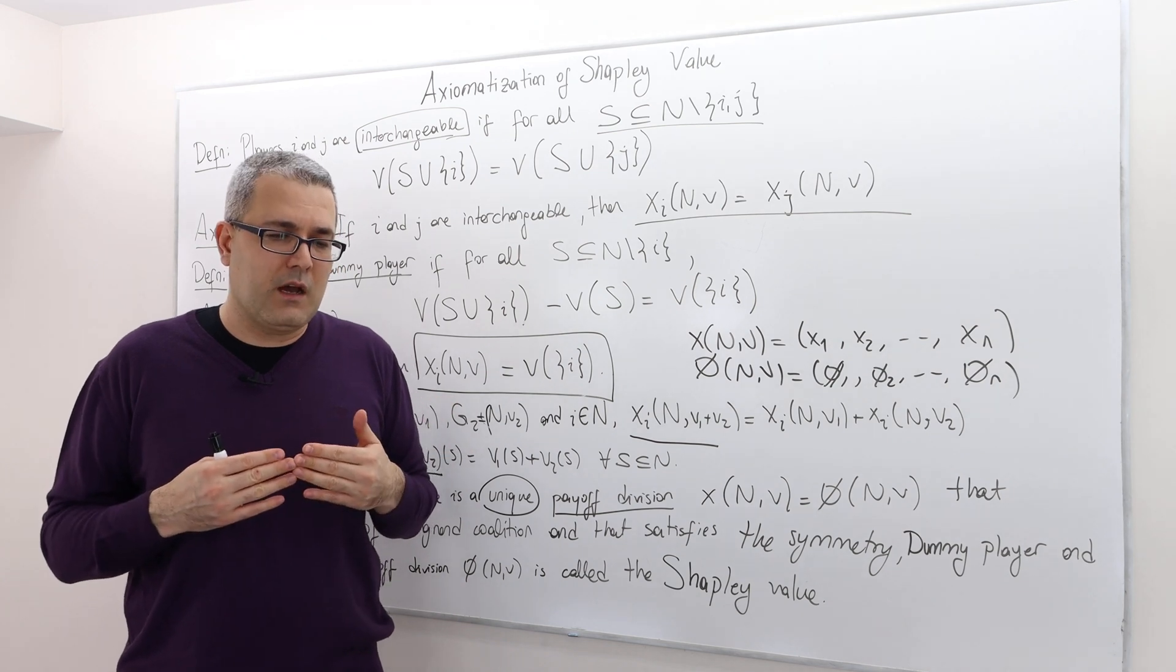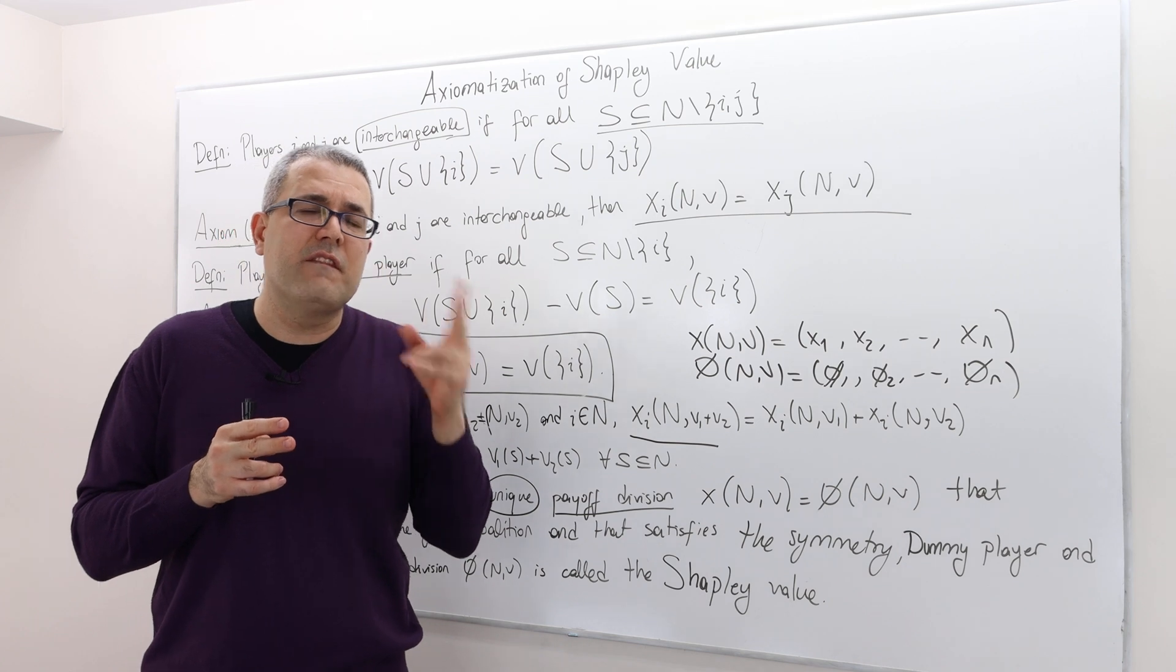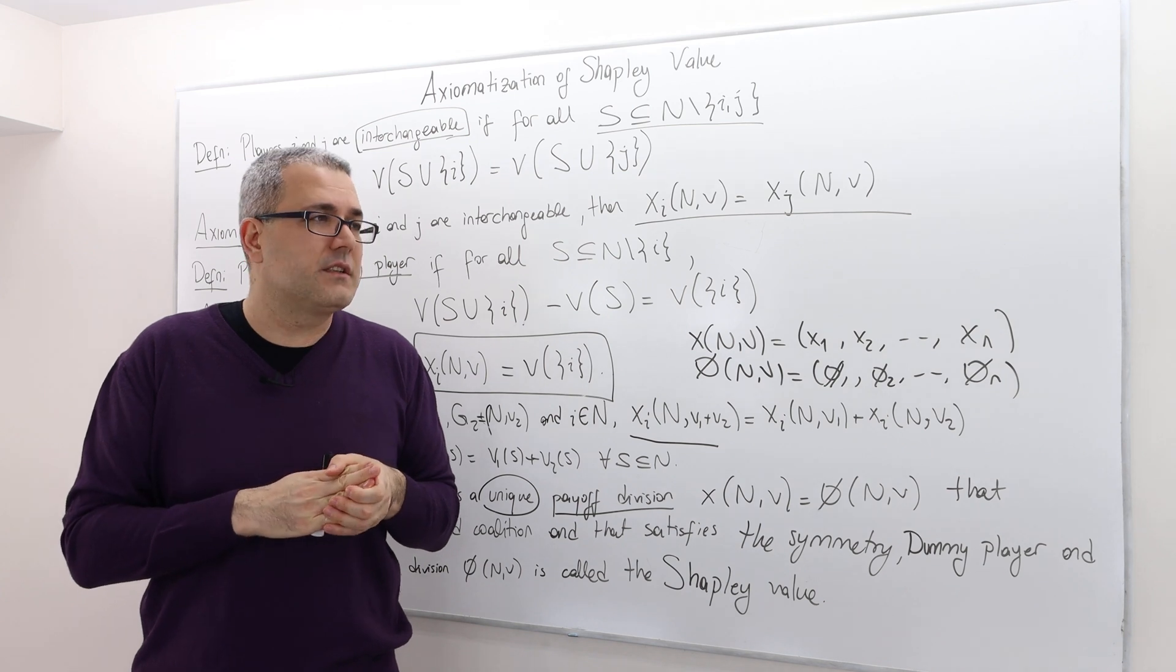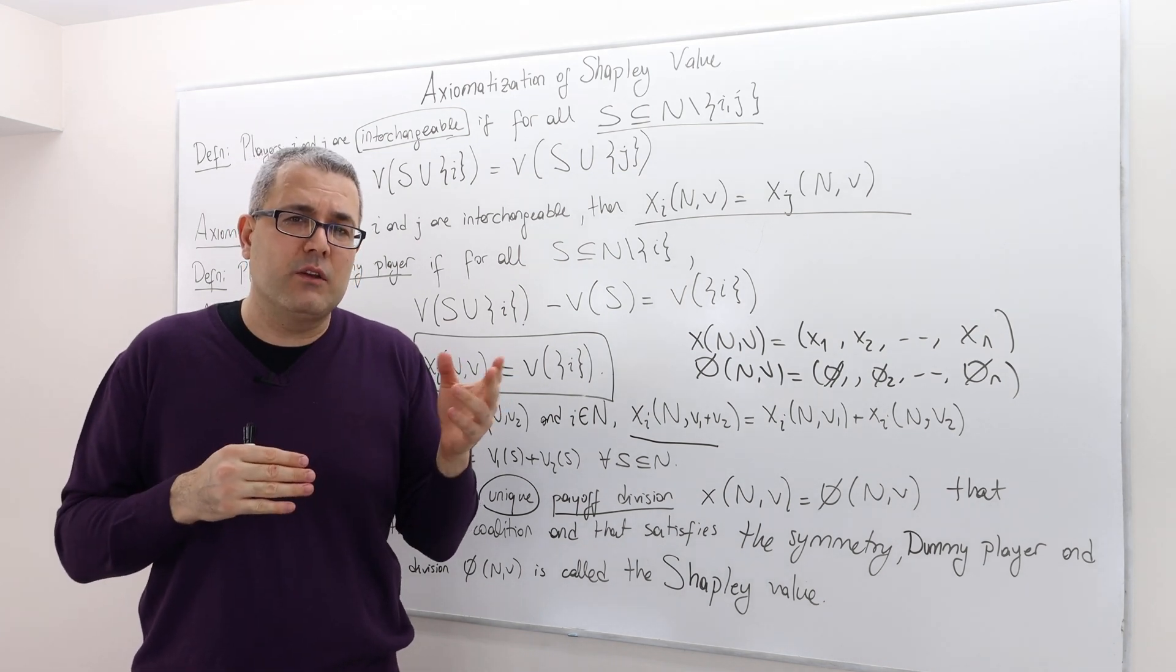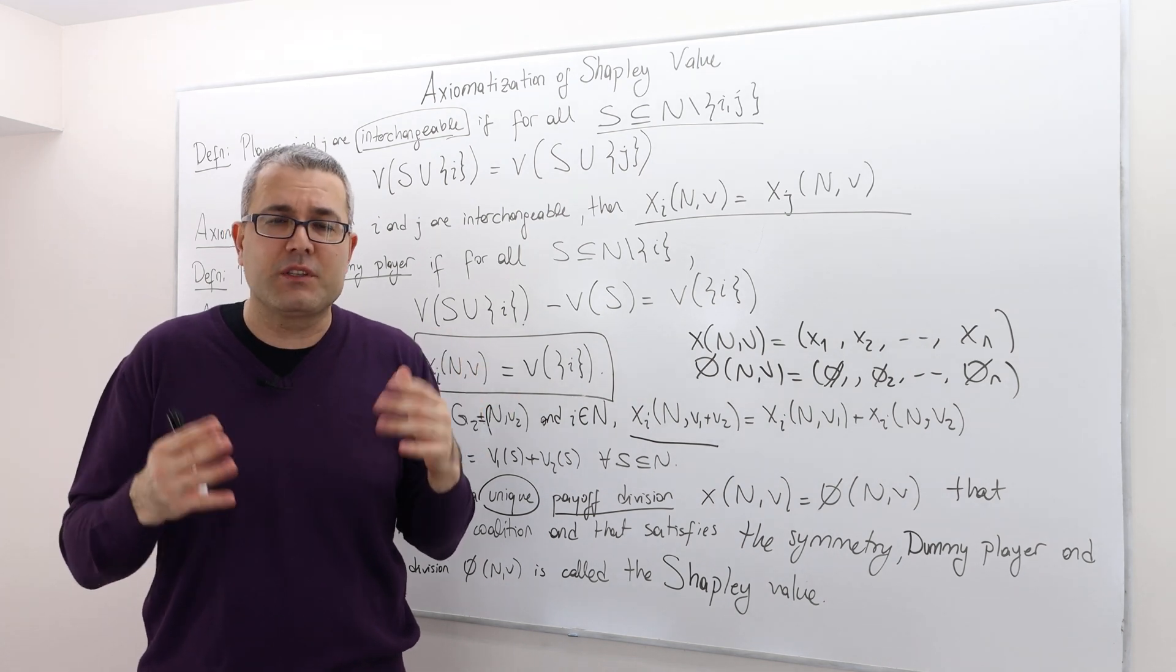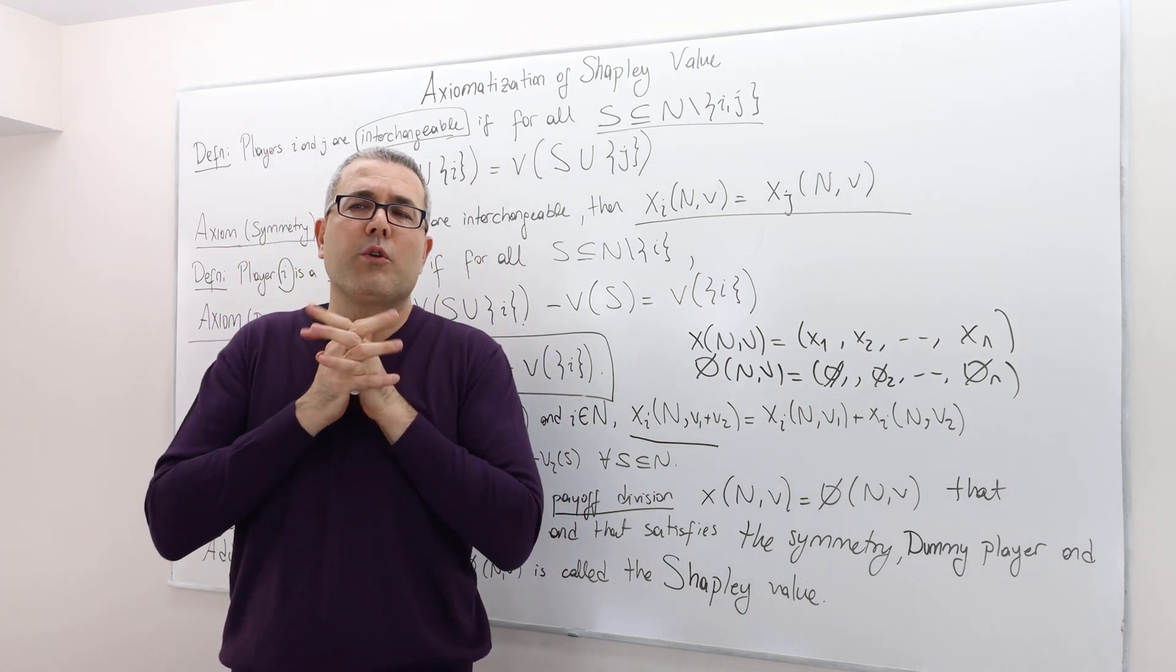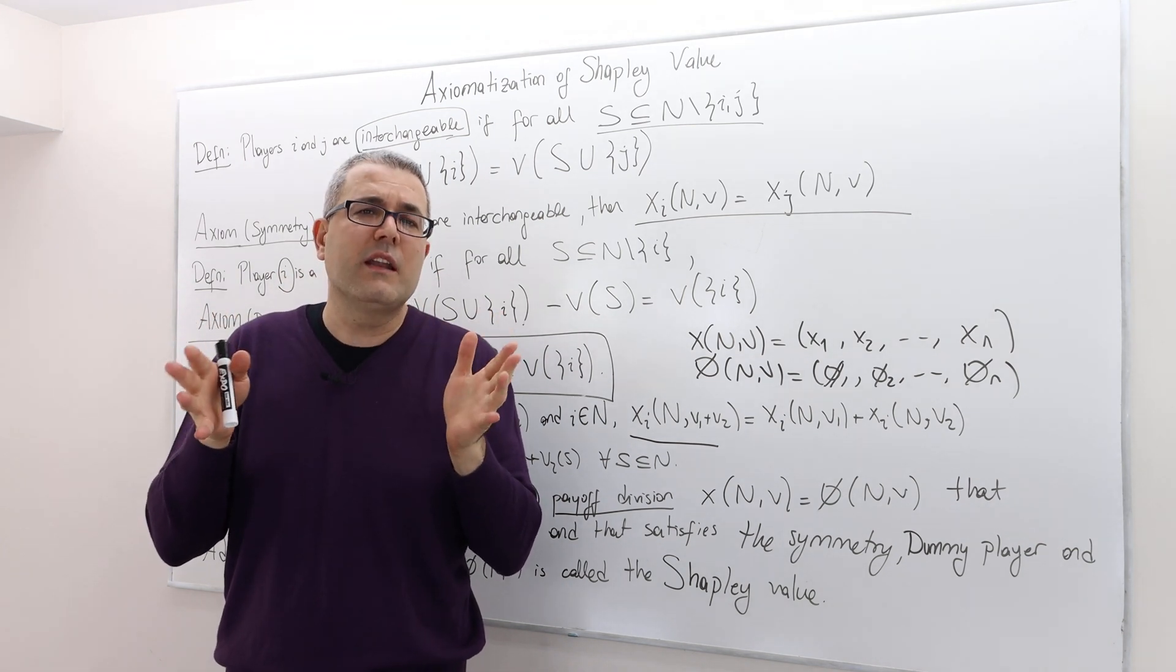It basically implies that if you, for example, take the same game and increase the value for each coalition. If you increase the value, you know, 50% or a hundred percent. So if you double the value for each player, I mean, think it this way, you double the money or you double the amount of ice cream in our ice cream example for each coalition.